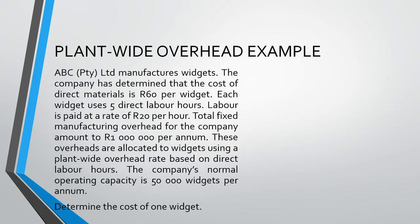Let us have a look at an example. We have a company, ABC Pty Ltd, which manufactures widgets. Our direct material cost is 60 Rand per widget. Each widget uses five direct labor hours, and these direct labor hours are paid at a rate of 20 Rand per hour. The costs we have encountered so far are our direct costs. Remember that direct costs can be directly traced to the product via documents such as material requisitions and timesheets.